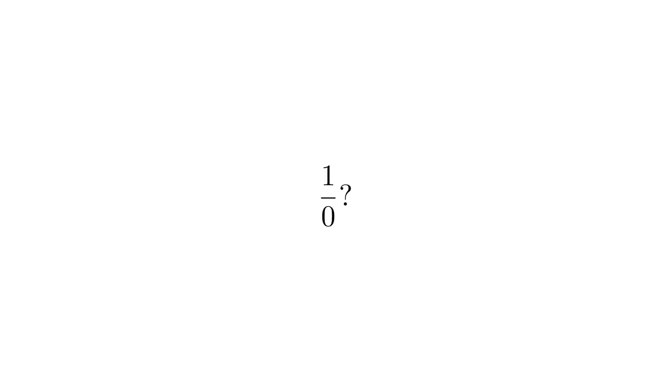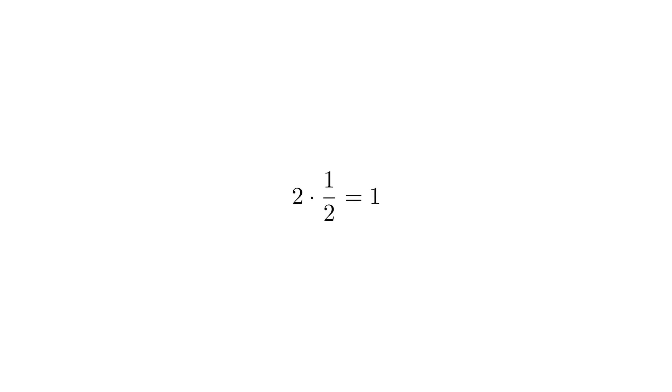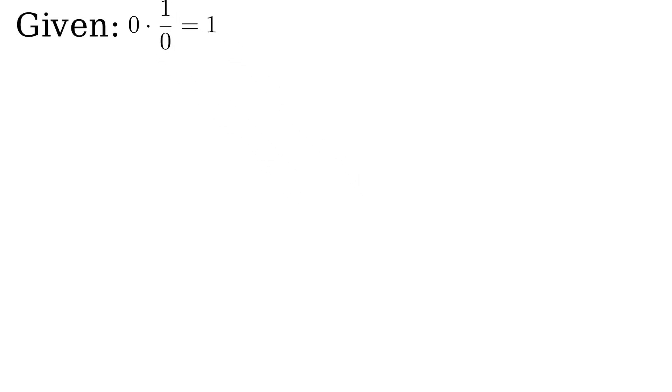So what about zero inverse? Well, let's do it. Let's start with the real numbers, throw in an inverse of zero, and just see what kind of number system pops out. Just like a half is the unique number such that two times a half is one, our inverse of zero is going to be the unique number such that zero times the inverse of zero is one. So let's assume that's true. Then what?